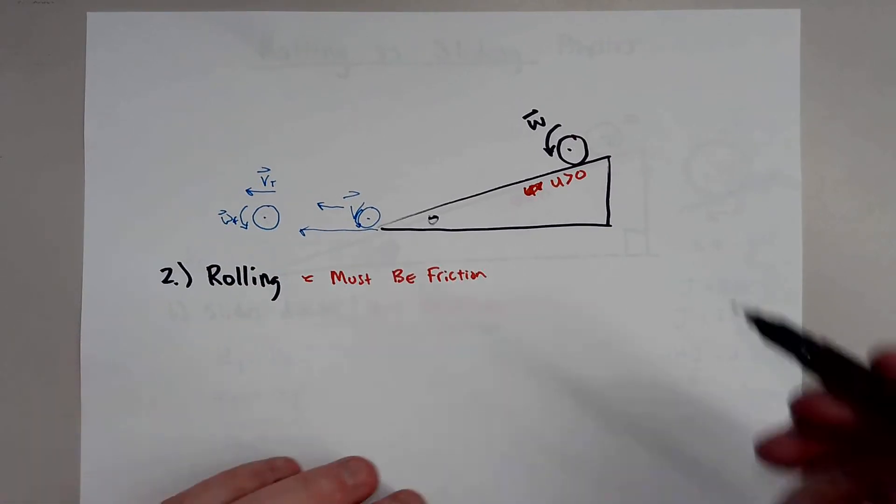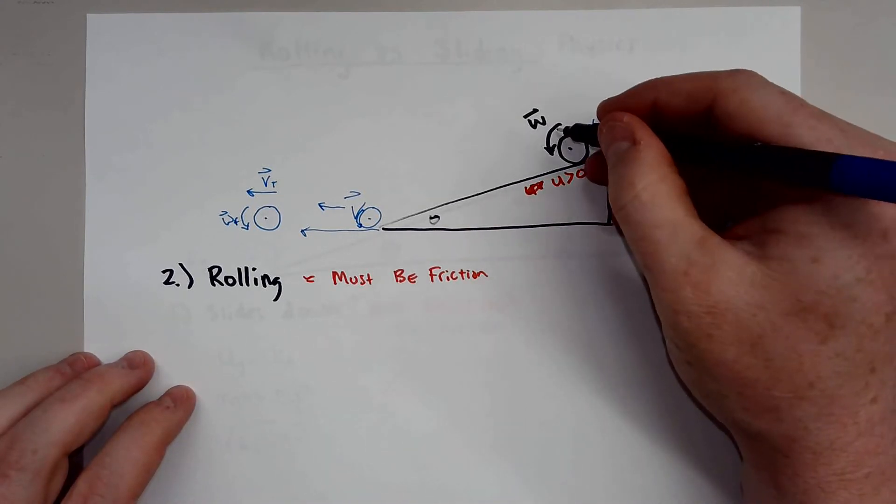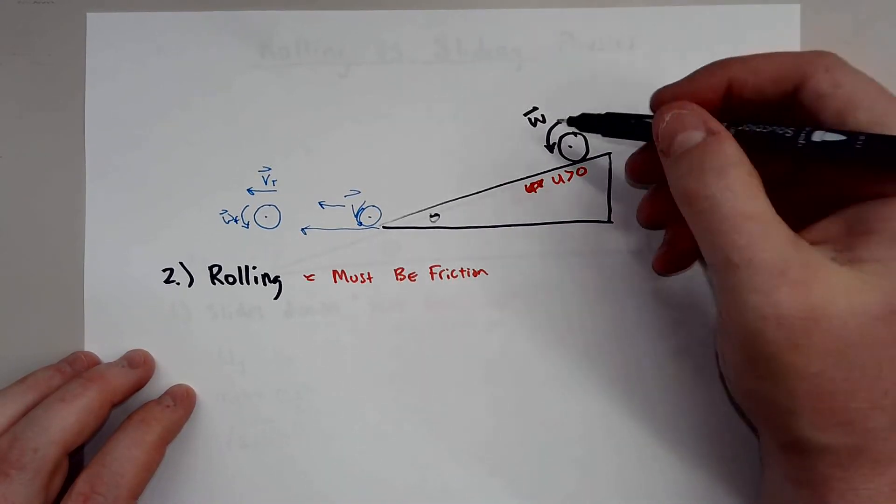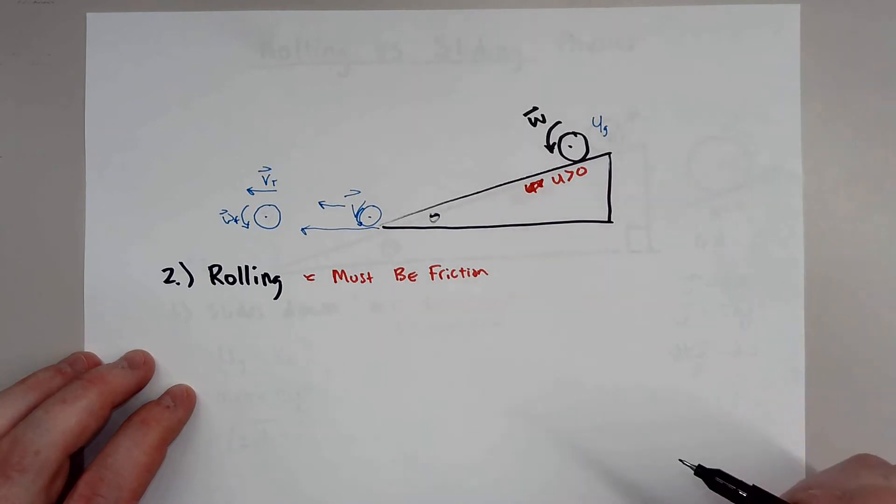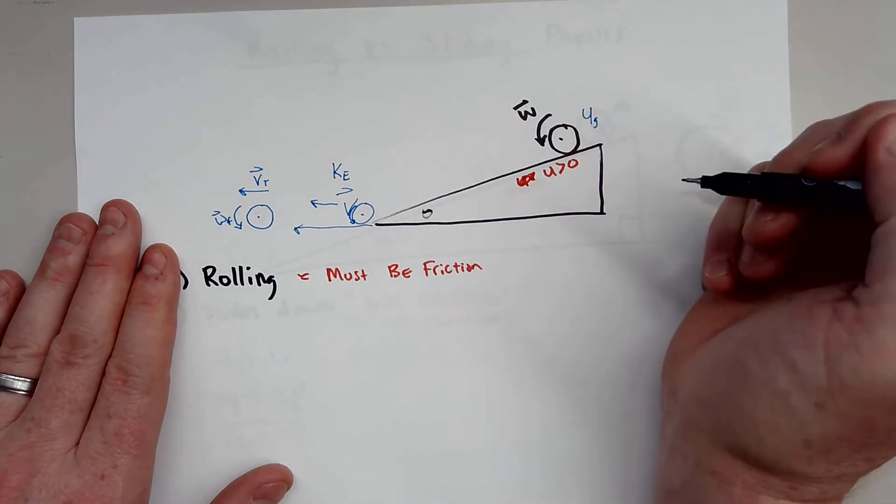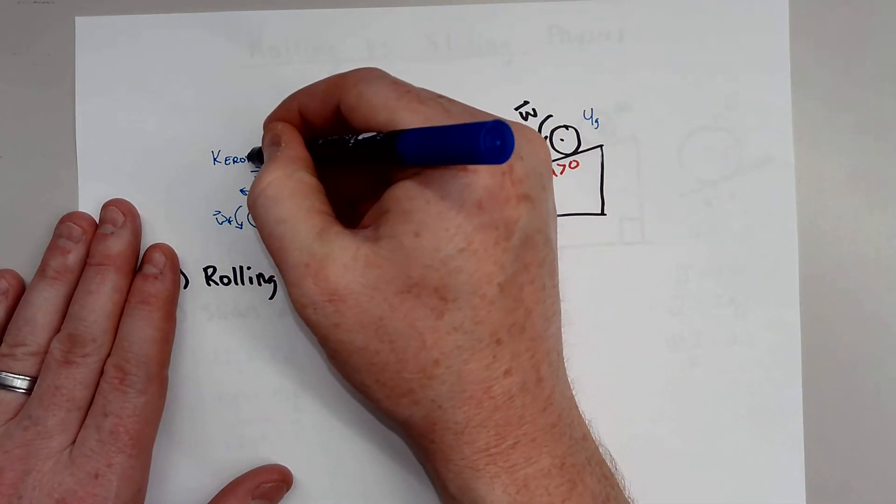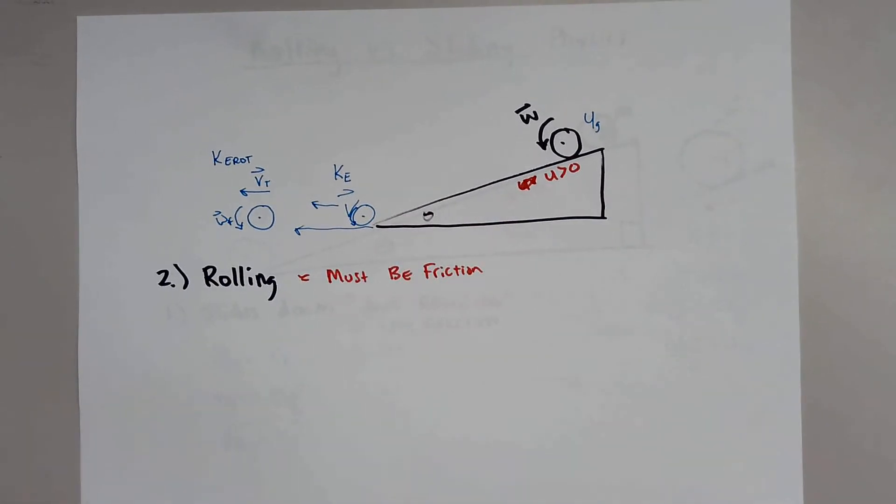So whenever you solve for this, you notice you have potential energy at the top, so obviously the object is not rolling initially, and then it will start to roll as it accelerates down the ramp. But at the bottom, you still have your kinetic energy translational, which is the typical, but you also have a new one, kinetic energy rotational. So there's energy being lost due to rotation.